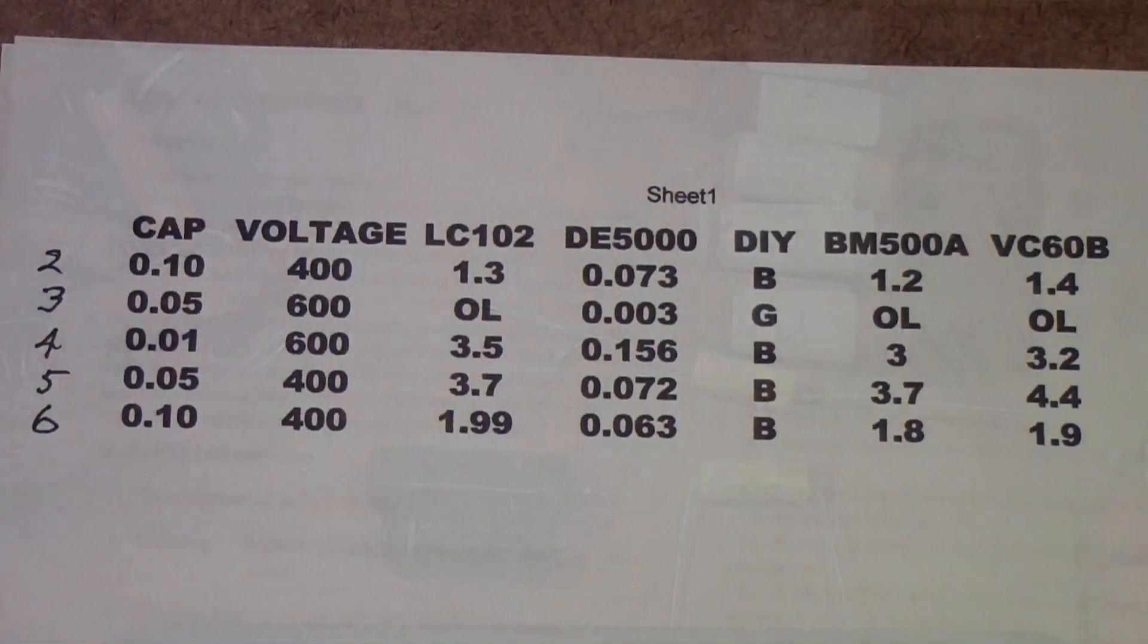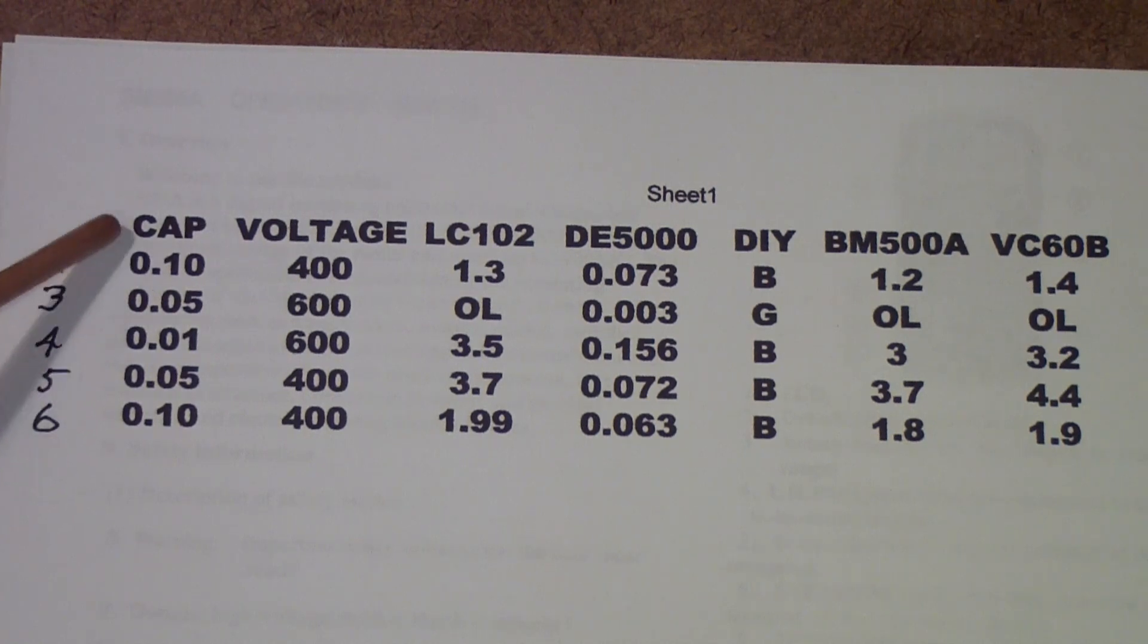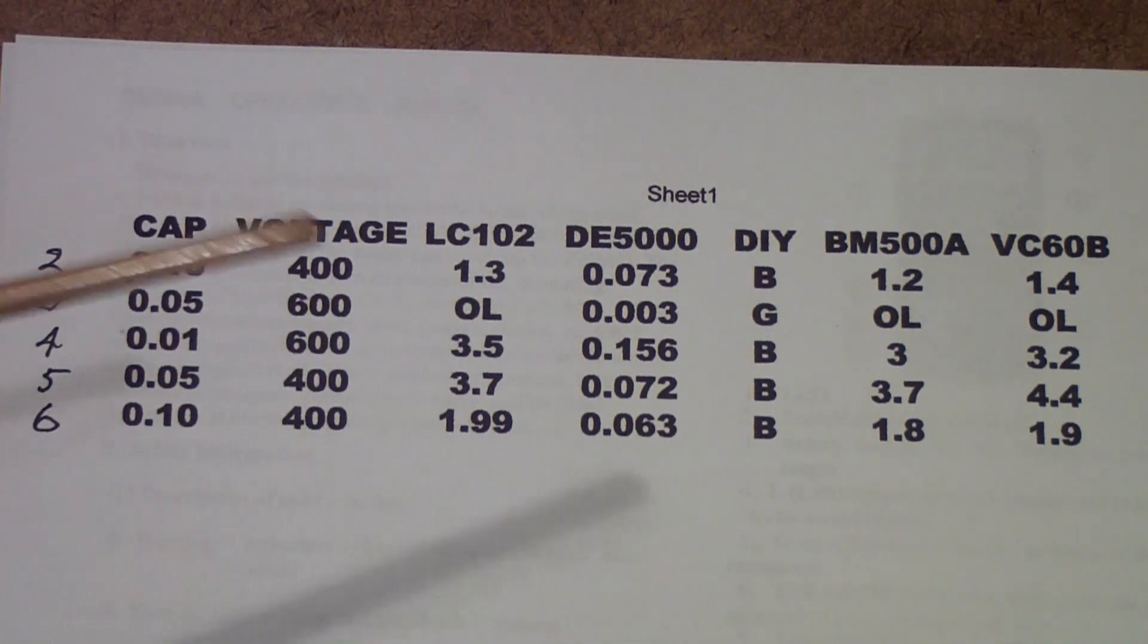Here are capacitors number 2 through 6. By the way, capacitor number one was this one which I'll talk about in a little bit. Their capacities - I chose deliberately 0.1 and 0.05 because those tend to be two of the most popular sizes you find in vintage tube equipment, and I chose some at 400 volts and some at 600 volts.